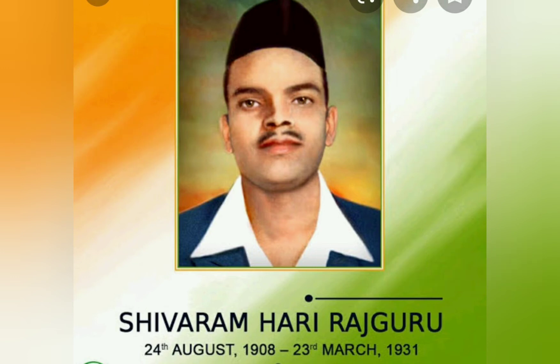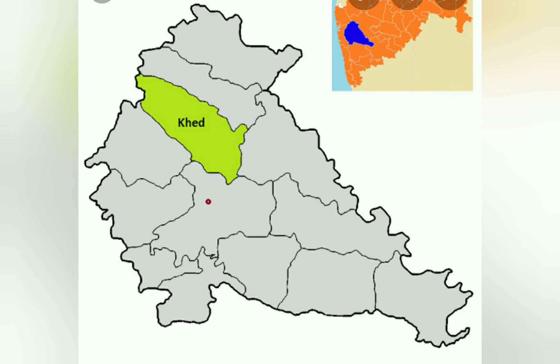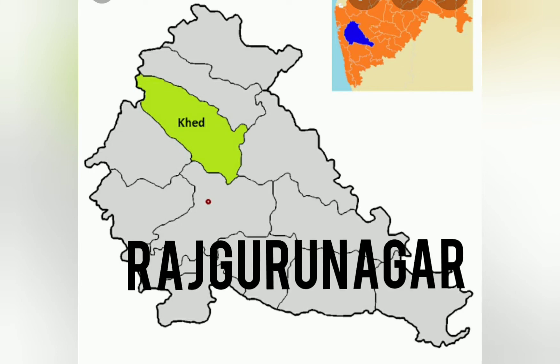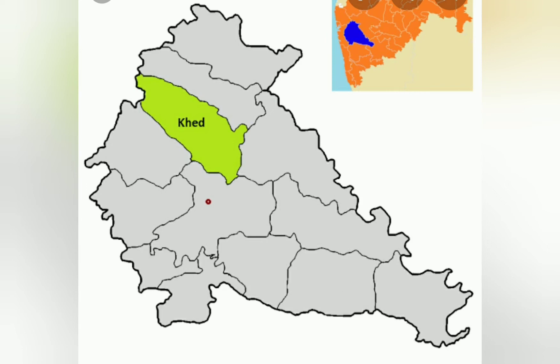Bhagat Singh and Sukhdev were his close friends. Later, he took part in revolutionary activities and became a martyr for the country. In his memory, Kheri — his birthplace — has been renamed Rajguru Nagar. So now near Pune, Rajguru Nagar is there. What was the previous name of Rajguru Nagar? Kheri, because Kheri was the birthplace of Shivram Hari Rajguru.